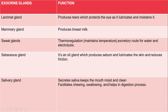The salivary gland secretes saliva, which keeps the mouth moist and clean and facilitates chewing, swallowing, and helps in the digestion process. Saliva keeps the mouth very clean. When we eat food, saliva mixes with it, making it easier to chew and swallow. It also aids in the digestion process.